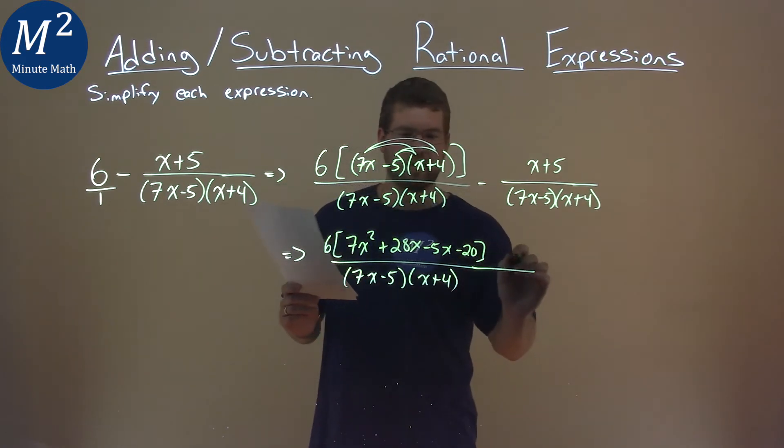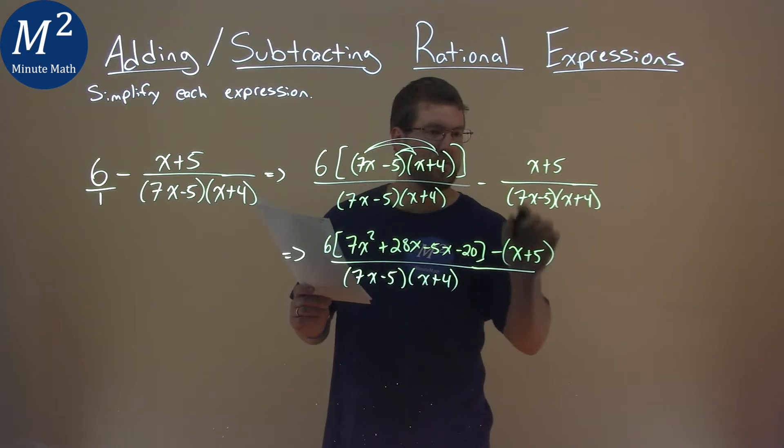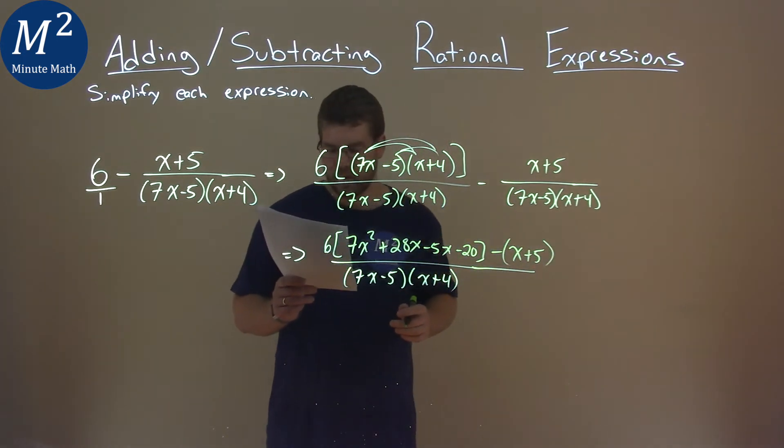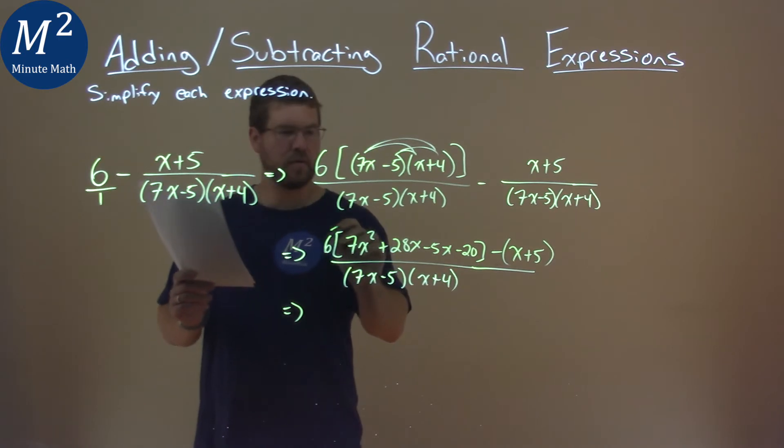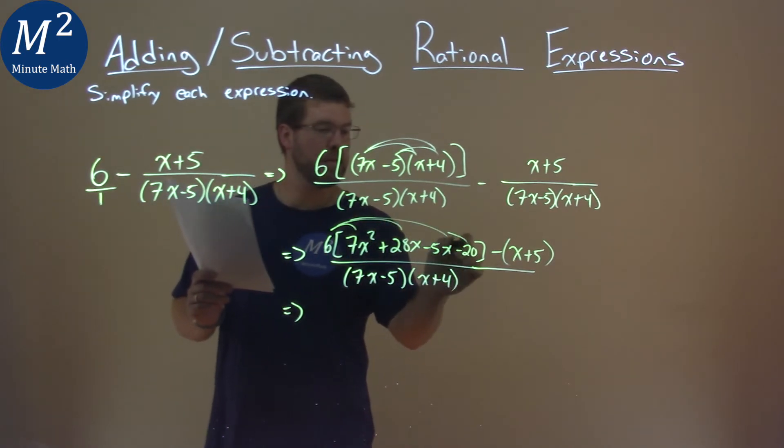Then we still have to subtract that x plus 5 and make sure it's in parentheses there. Continuing on, distribute the 6 across to all parts here as we combine it.